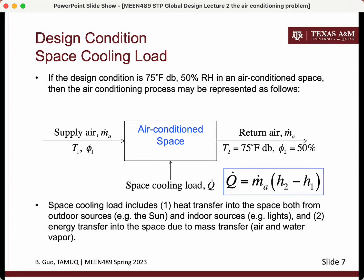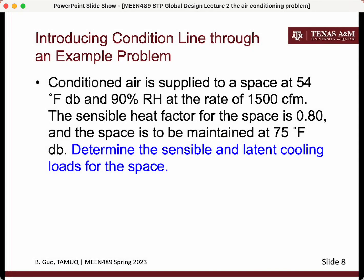The air conditioning problem is shown abstractly as moist air flowing through a control volume with energy — both sensible and latent — being added at a certain rate. That rate is the cooling load. The enthalpy of the moist air increases as it flows through the control volume. The process of air flowing through the conditioned space can be shown on the psychrometric chart. In this practice problem, given the supply air and return air conditions and the air flow rate, you can determine the sensible and latent portions of the cooling load.